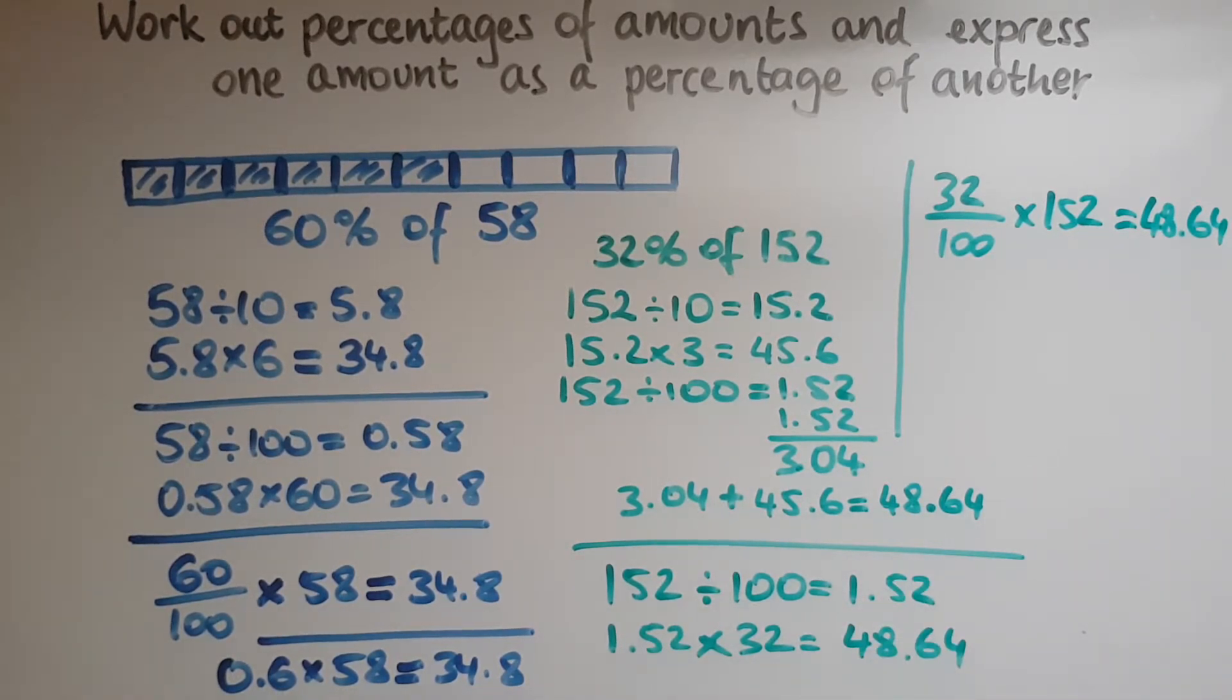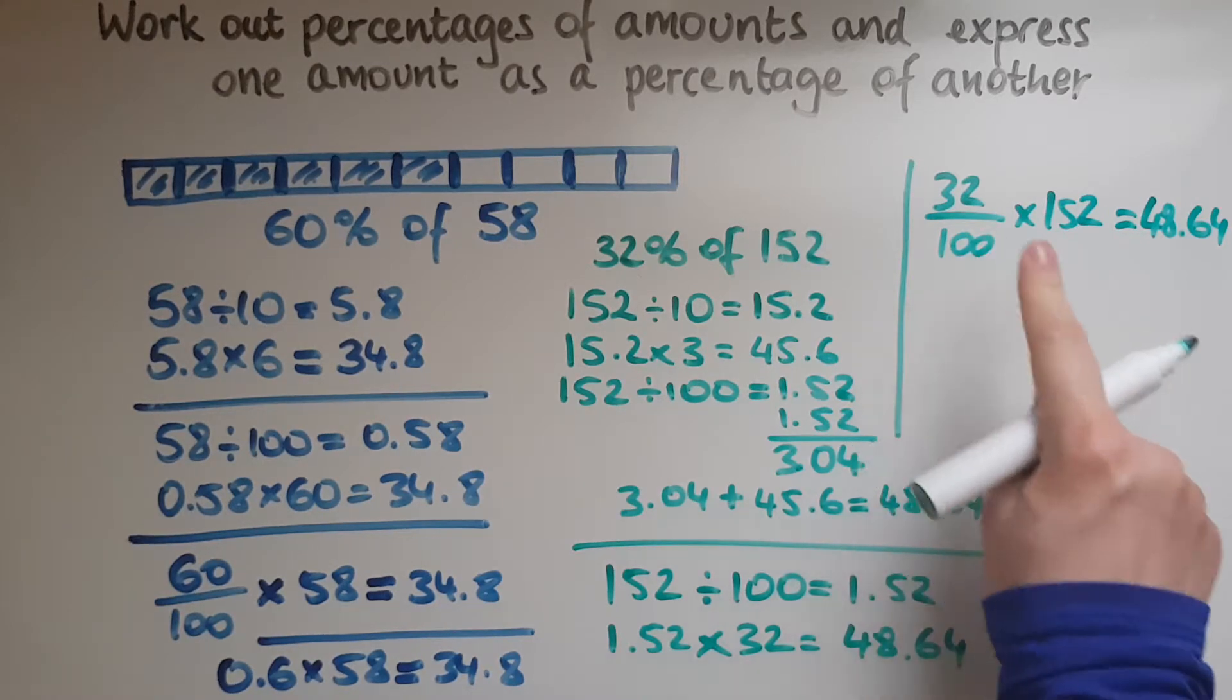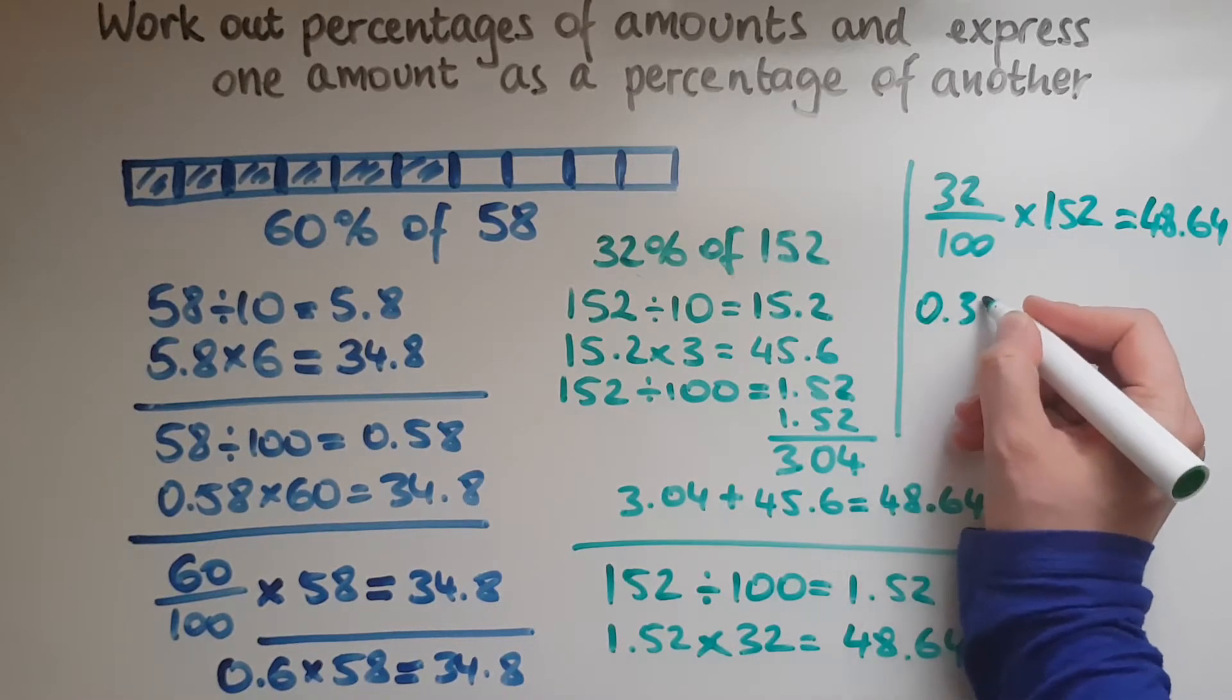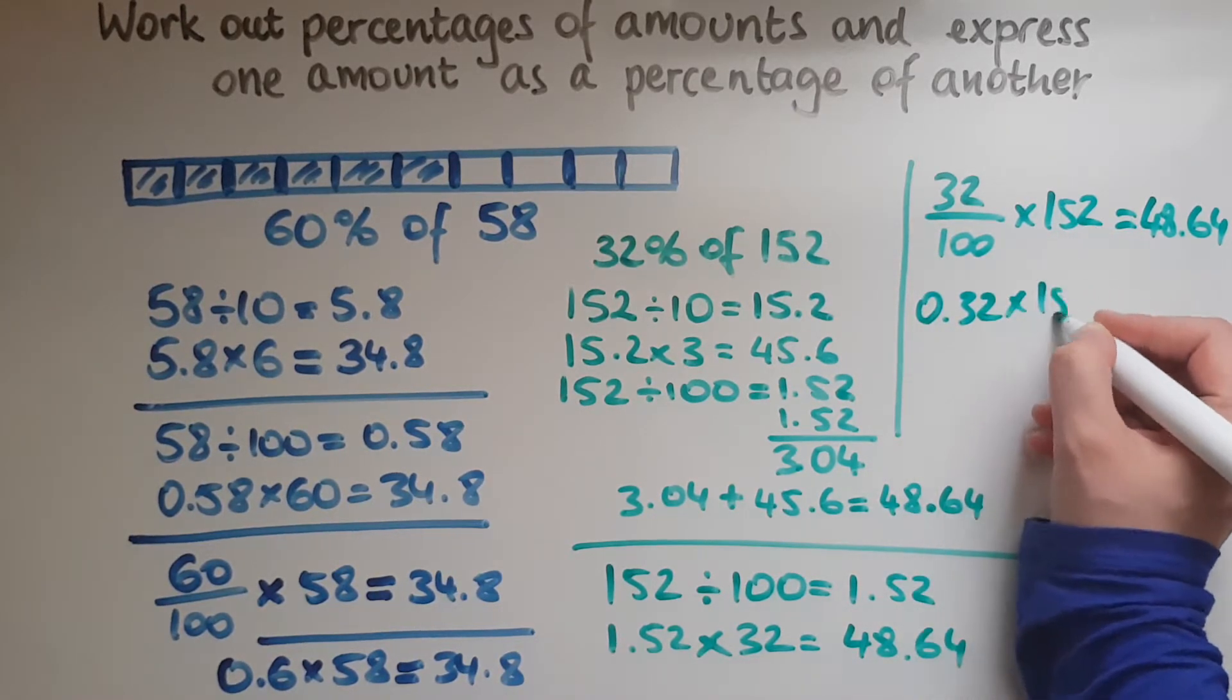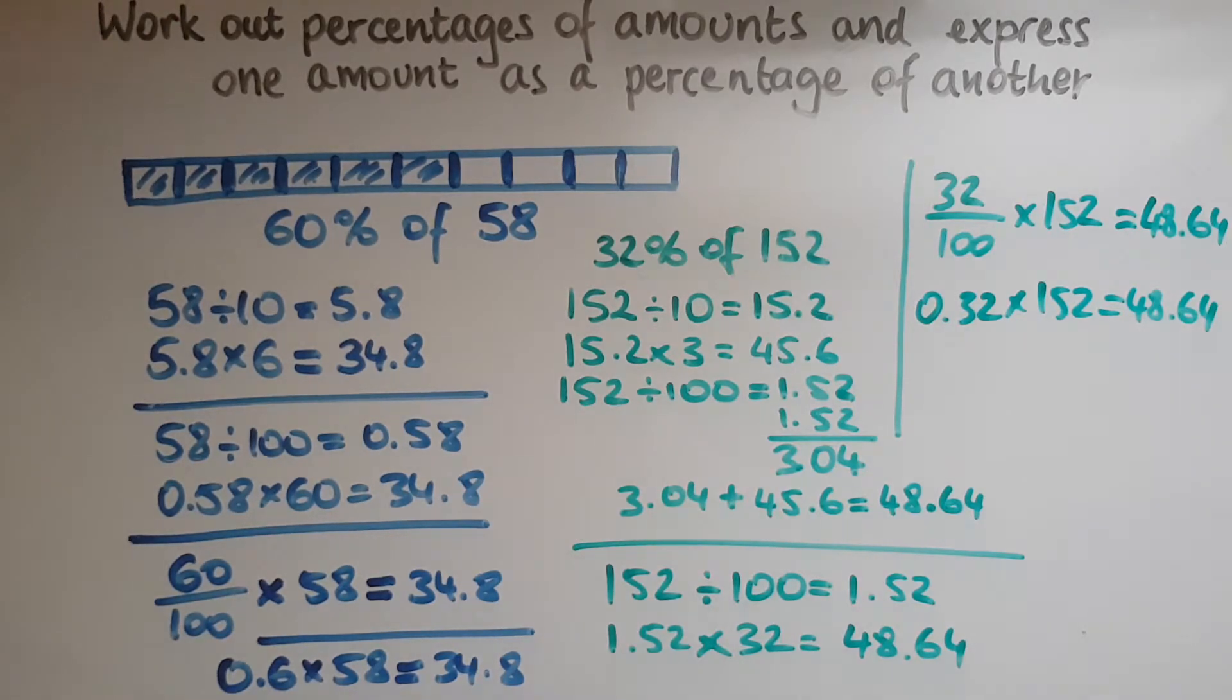So that straight away gives us the answer, which is 48.64. And linked to this was the other method where we know straight away that 32 divided by 100 is 0.32 times 152 gives us 48.64.